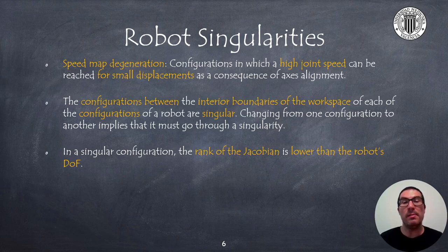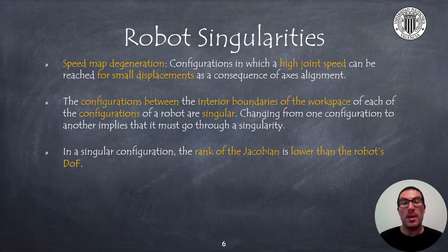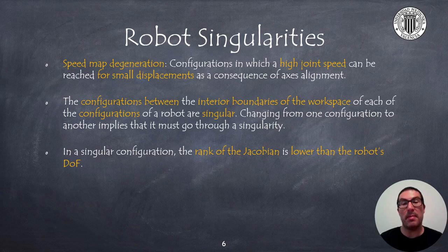For instance, a serial manipulator robot has up to eight different configurations. In the interior boundaries of the workspace of each of these configurations, there is a singular configuration joining all these workspaces. Therefore, changing from one configuration to another implies that the robot must necessarily go through a singularity, which will cause high speeds in some of the robot joints. In these configurations, the rank of the robot Jacobian is less than the number of degrees of freedom, which implies that the Jacobian will be poorly conditioned for its inversion and therefore that is actually the cause of the speed map degeneration.